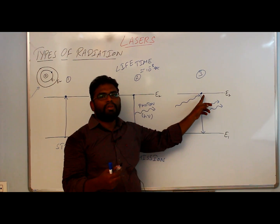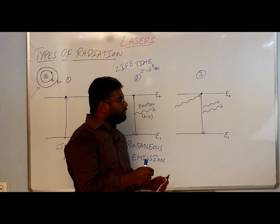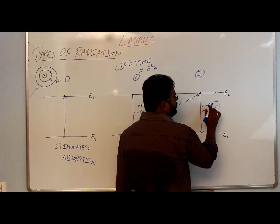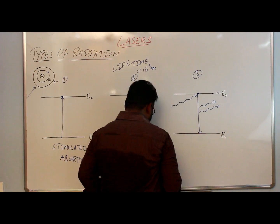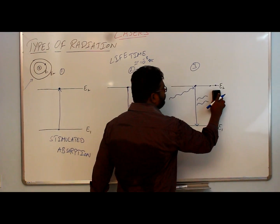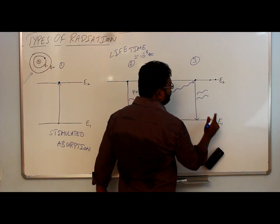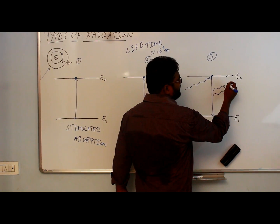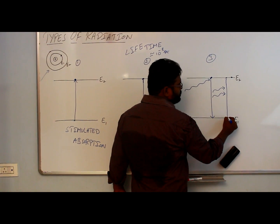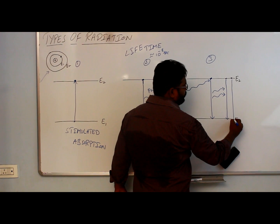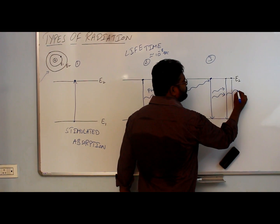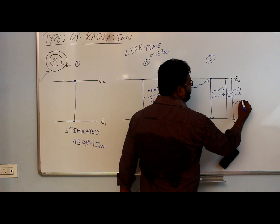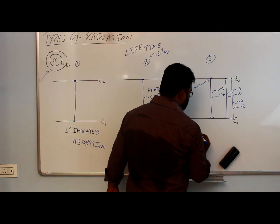What we have to remember is that two photons are emitted before the lifetime is over, because we are supplying the energy before the lifetime. So before lifetime, two photons go and stimulate two more electrons in the excited state — those electrons also come to the ground state, and due to each downward transition two more photons emit. This process is known as stimulated emission.